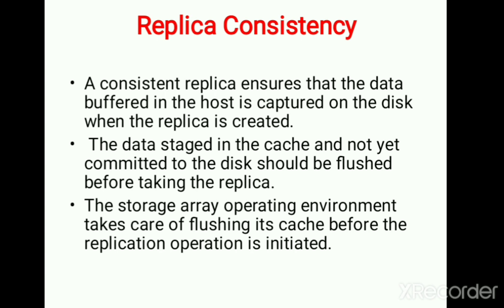Now let us look at replica consistency. When we create a replica — an exact copy — it is like a twin. We need to make sure it is consistent, meaning it is the same as it was previously, not changing even by seconds. Each and every IO operation on every device must give the data in the same way. This consistency applies in terms of both the file system and the database, and we use the help of the cache, ensuring it is flushed so no other operations or data interfere.